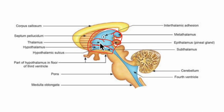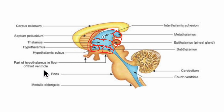Those are the three parts in the dorsal part of the diencephalon. Now looking at the ventral part, we have the hypothalamus right here and the subthalamus. You can see the part of hypothalamus in the floor of the third ventricle shown right here. So the ventral part of the diencephalon consists of the hypothalamus and the subthalamus.